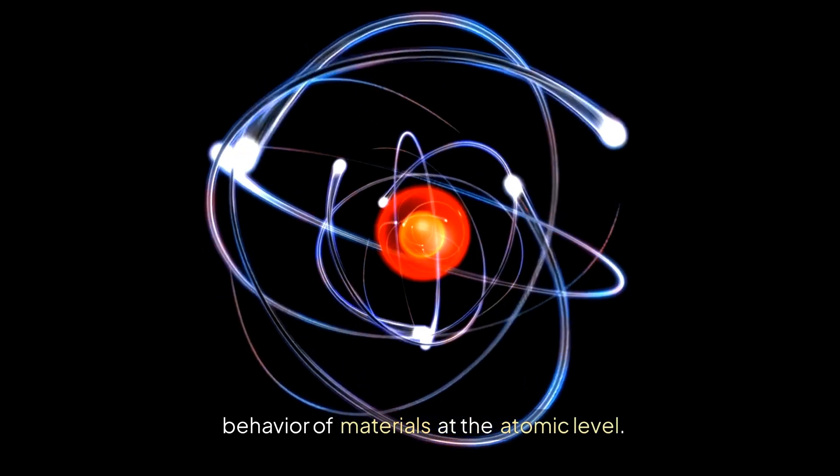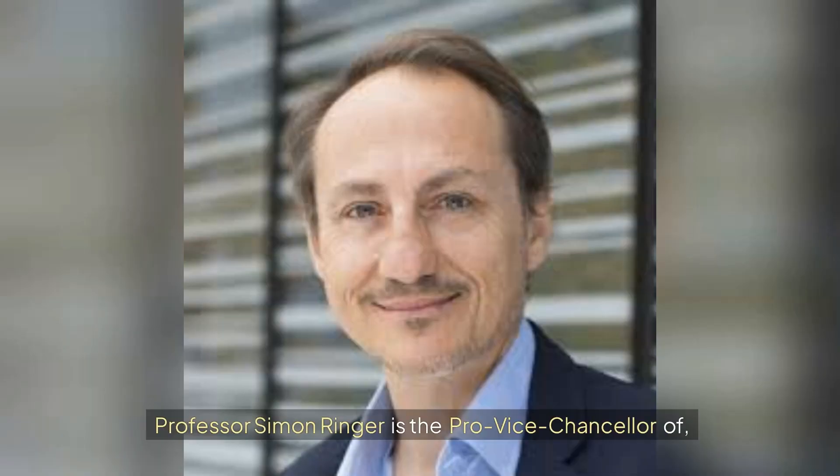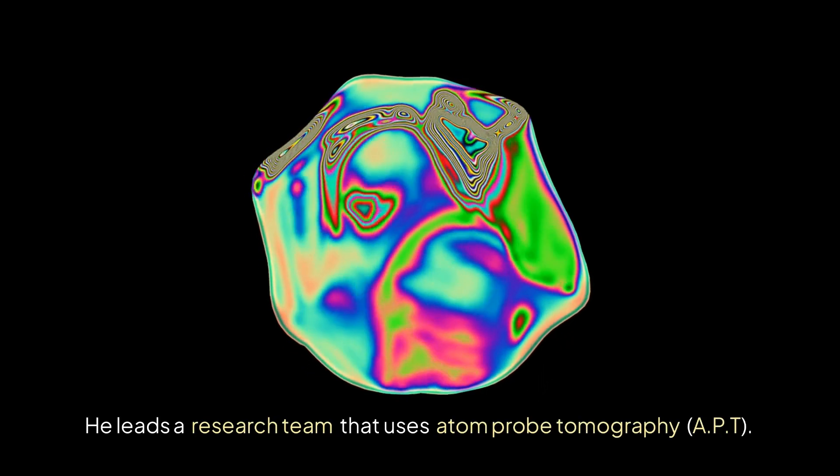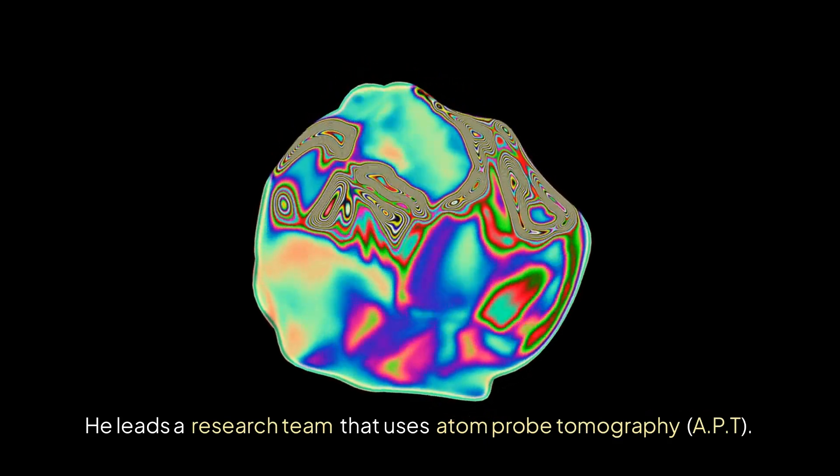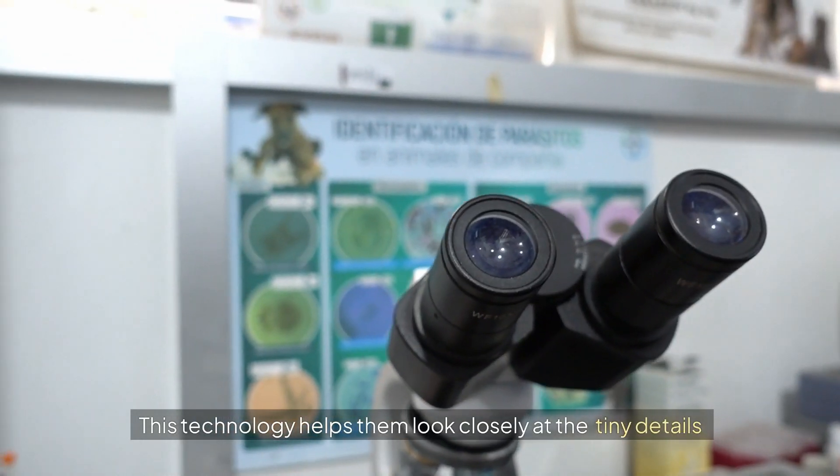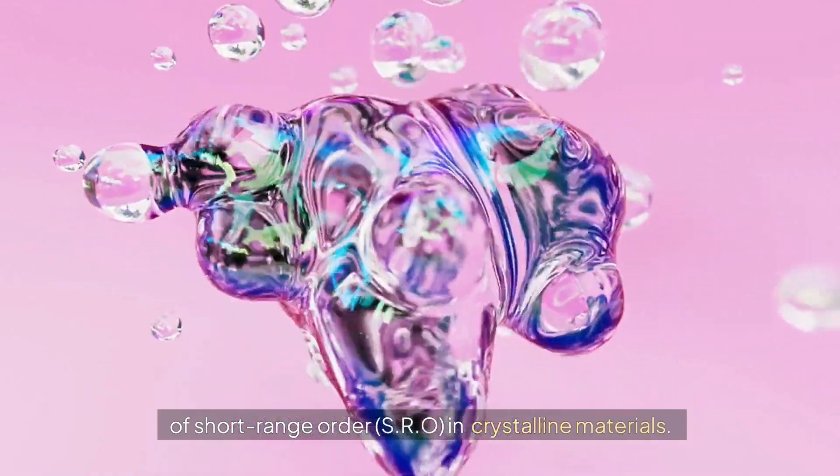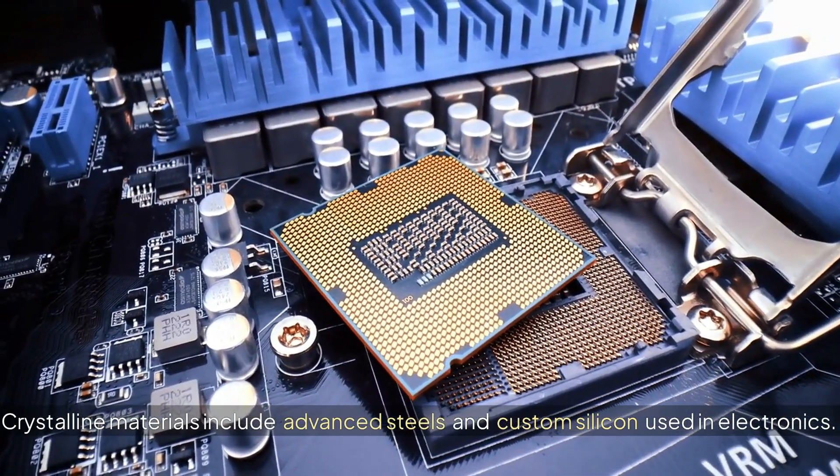Professor Simon Ringer is the Pro Vice-Chancellor of Research Infrastructure at the University of Sydney. He leads a research team that uses atom probe tomography (APT), a technology that helps them look closely at the tiny details of short-range order (SRO) in crystalline materials. Crystalline materials include advanced steels and custom silicon used in electronics.